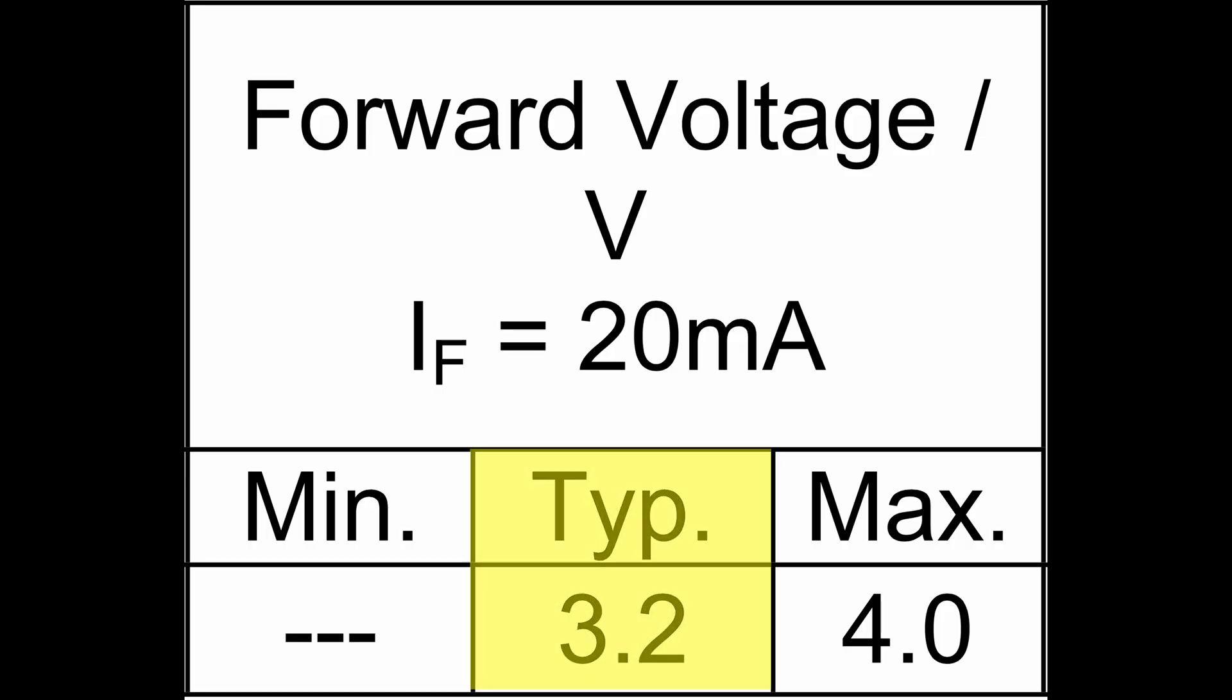First, we want to look for two values in the LEDs data sheet. This is the forward voltage and the forward current. The forward voltage is the voltage required for the LED to turn on, and the forward current is the current that the LED is able to sustain without burning out.